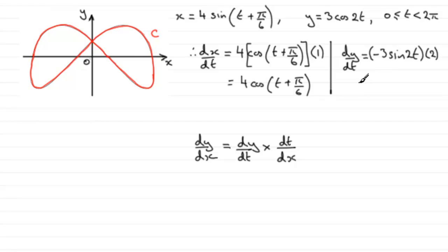So when this is put together, we end up with minus 6sin 2t. So for dy by dx, it means that we've got dy by dt, which is minus 6sin 2t.